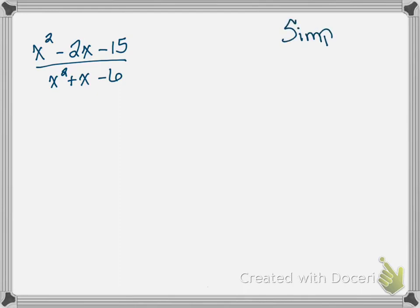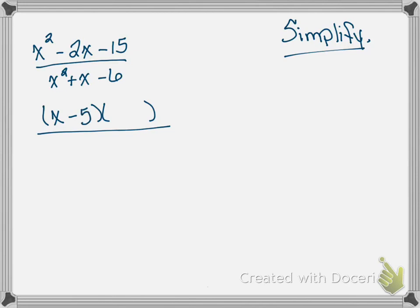A very good habit to get into as soon as you look at these problems is to go ahead and factor. Factoring is one of those things that doesn't go away. So we're going to factor x squared minus 2x minus 15. The product is negative 15, the sum is negative 2. Our a value is 1, so we're looking for a product of negative 15 and sum of negative 2 — that's negative 5 and positive 3.